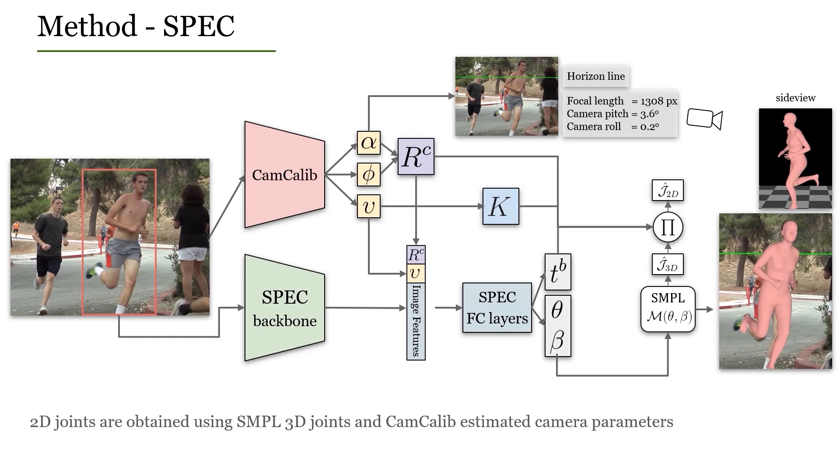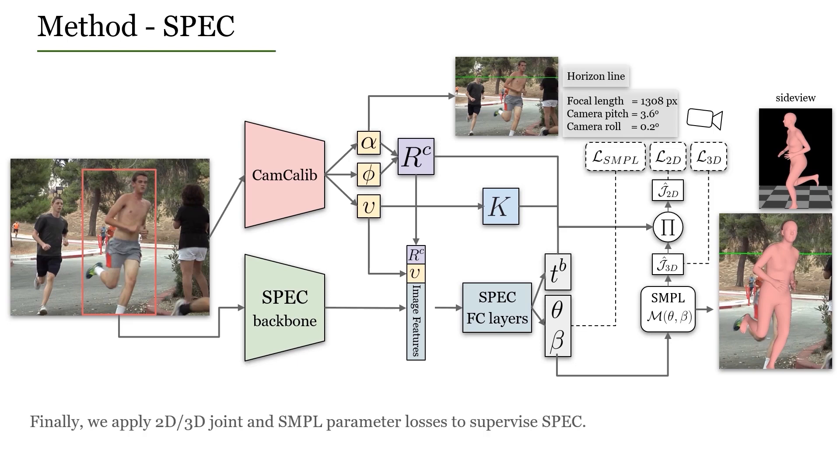To train SPEC using 2D joint labels, we project 3D SMPL joints into the image using the camera parameters estimated by CAM-CALIB. We then train SPEC using standard 2D joint and SMPL parameter losses.